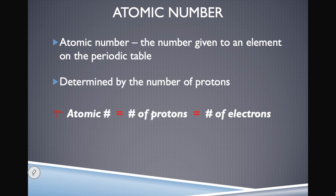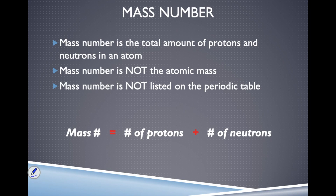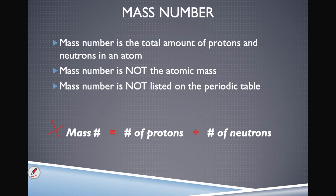The second important number is called the mass number. The mass number is equal to the number of protons plus the number of neutrons found in an atom — so it's the total amount of protons and neutrons.